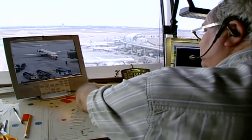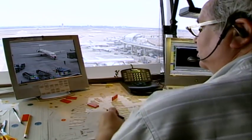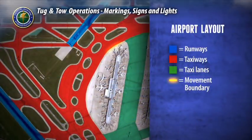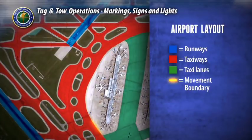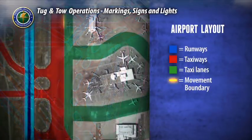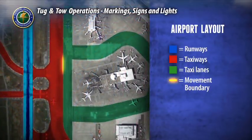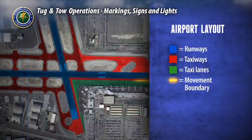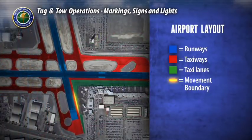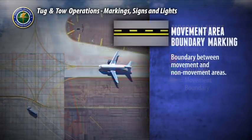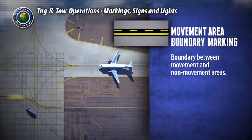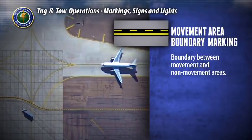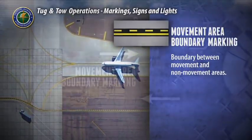Some airports' taxi lanes are controlled by ramp towers. Since each airport's configuration may be unique, it is critical you know where your non-movement area boundary marking is located. Study your airport's diagram. The boundary between a movement and non-movement area is defined by a yellow dashed and solid striped line.